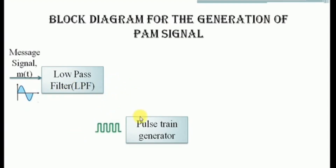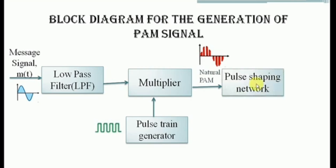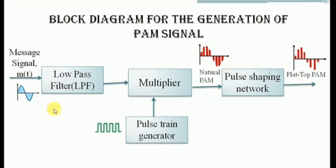The outputs of these two blocks — the pulse train and the band-limited message signal — are given as inputs to a multiplier circuit. The multiplier simply multiplies the two incoming signals and produces a natural PAM signal at its output. This natural PAM signal is then transformed into a flat-top PAM signal by passing it through a pulse shaping network.